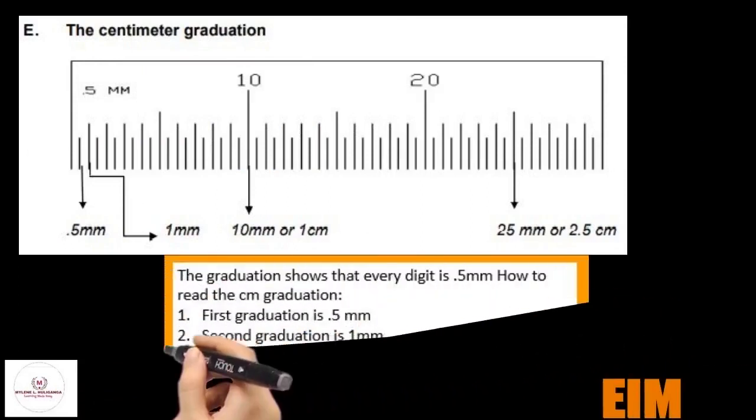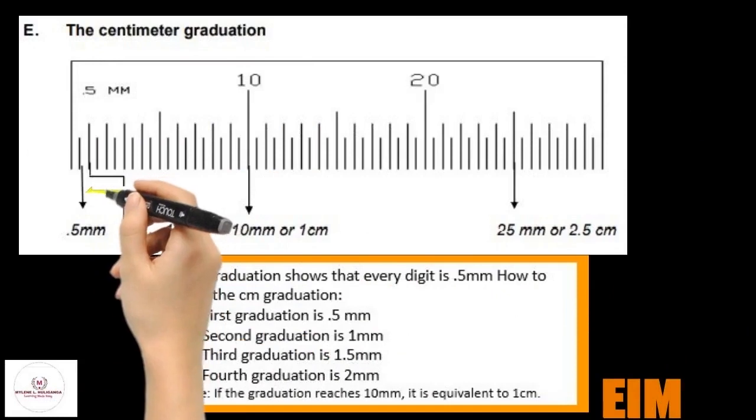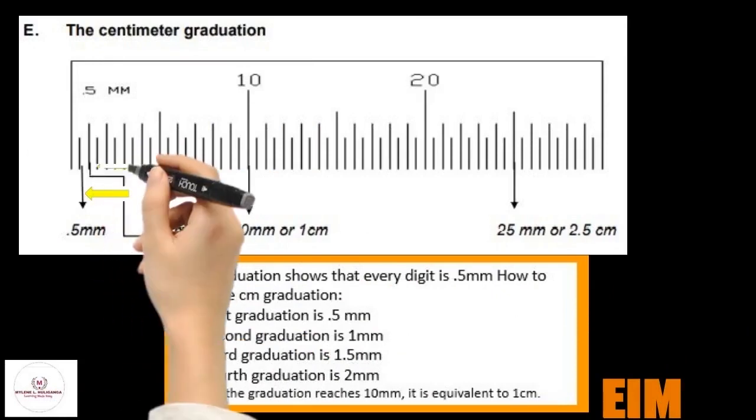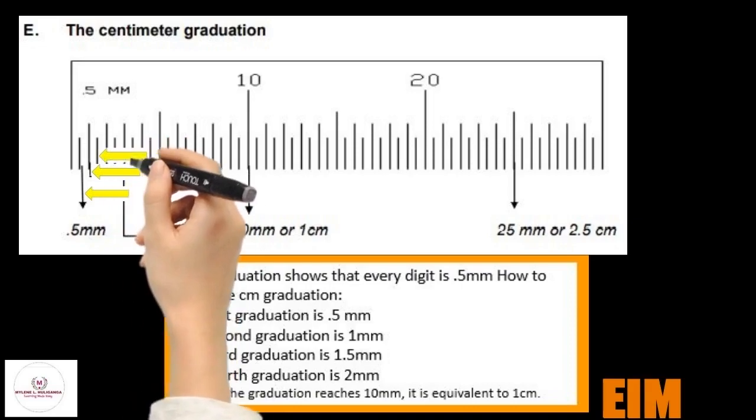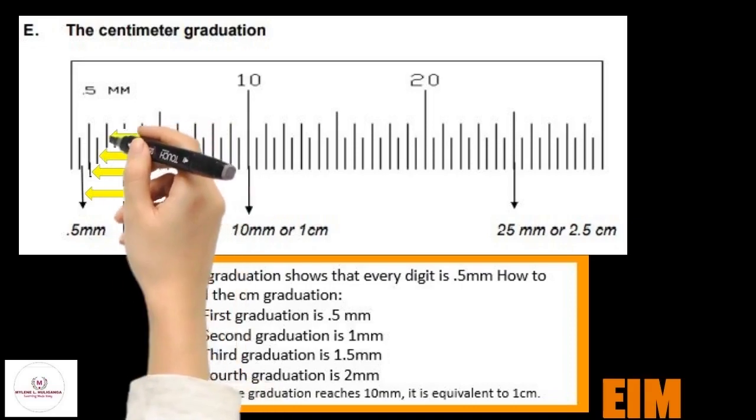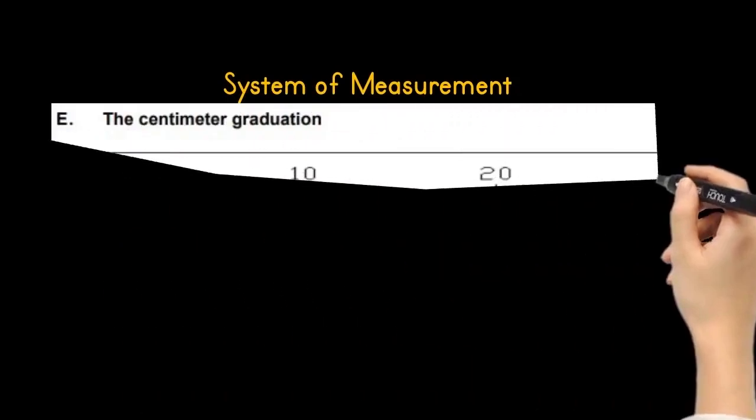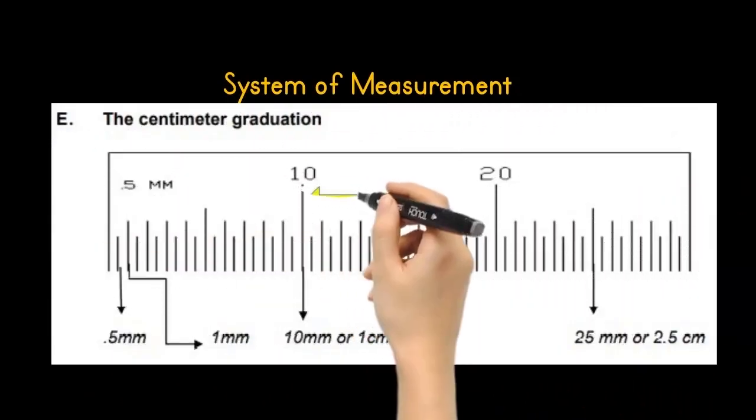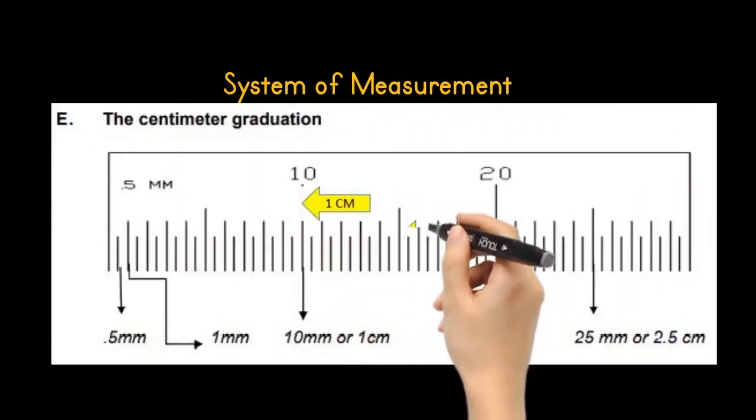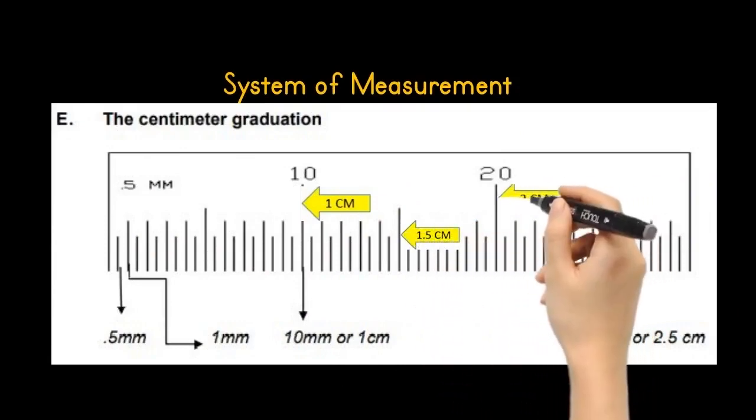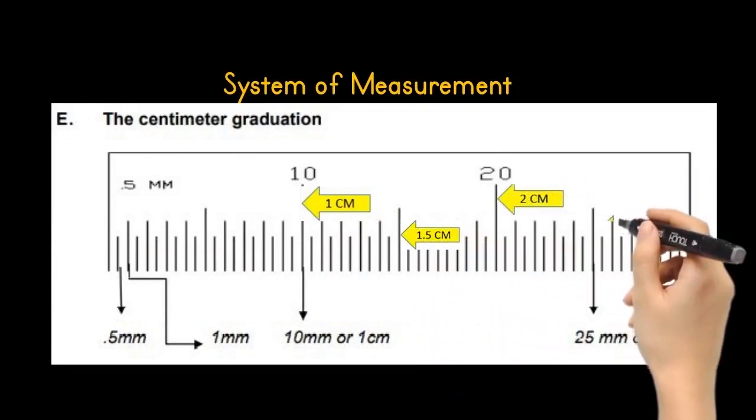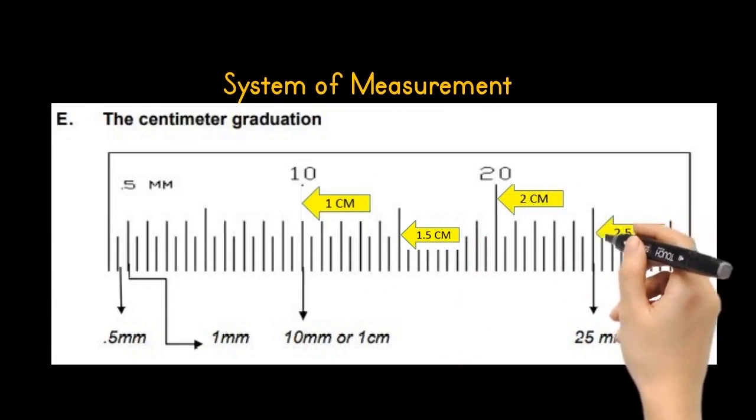The graduation shows that every digit is 0.5 millimeters. This is how to read the centimeter graduation: first graduation is 0.5 millimeter, the second graduation is one millimeter, the third graduation is 1.5 millimeters, the fourth graduation is 2 millimeters. The centimeter graduation: 10 millimeters is equal to 1 centimeter, 15 millimeters is equal to 1.5 centimeters, 20 millimeters is equal to 2 centimeters, 25 millimeters is equal to 2.5 centimeters.